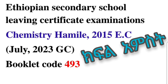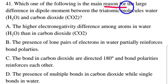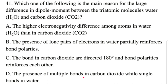Question number 41: Which one of the following is a main reason for the large difference in dipole moment between the triatomic molecules water and carbon dioxide? A: the higher electronegativity difference among atoms in water than in carbon dioxide. B: the presence of lone pair of electrons in water partially reinforce the bond polarities. C: the bond in carbon dioxide are directed 180 degrees and the bond polarities reinforce each other. D: the presence of multiple bonds in carbon dioxide while single bonds in water.